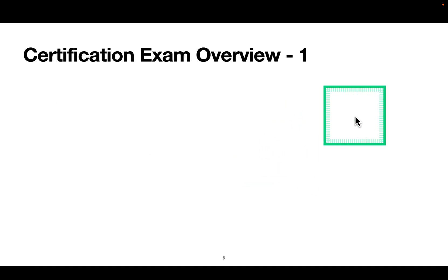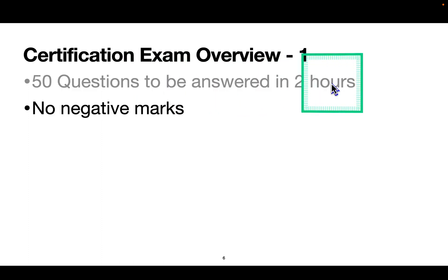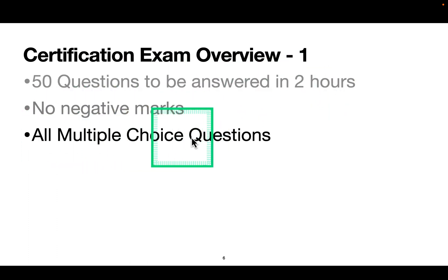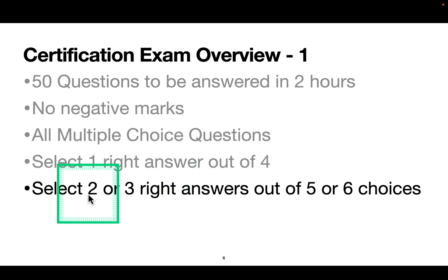Certification exam overview: The exam consists of 50 questions to be answered in two hours. There are no negative marks. All multiple choice questions. Select one right answer out of four, so you have four choices like A, B, C, D and you most likely have to choose one. But there are some questions in which you have to select two or three right answers out of five or six choices.